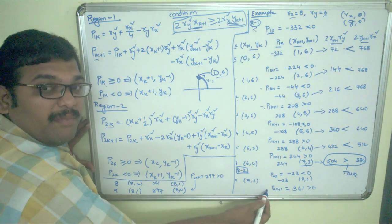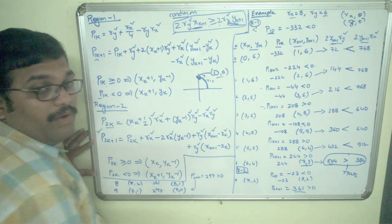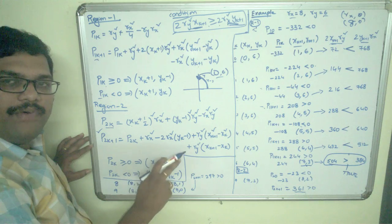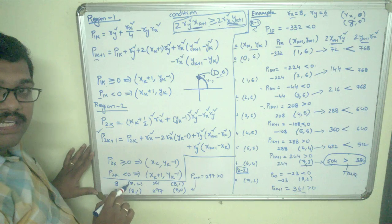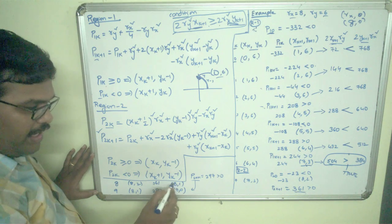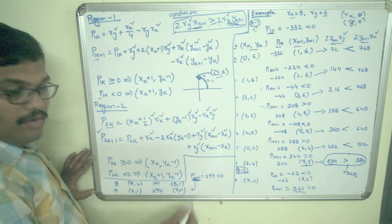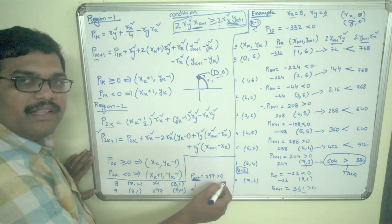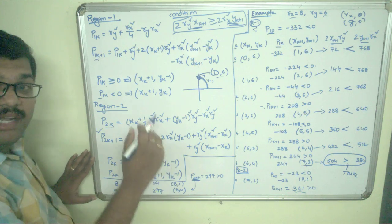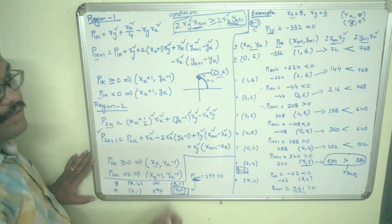Calculate p2k+1 using the region 2 formula, getting 361 > 0. If p2k > 0, x does not change and y decrements. So (8, 2) becomes (8, 1). Calculate the next decision parameter: 297 > 0. Again x stays at 8 and y decrements to 0, giving (8, 0) — our final coordinate. We stop the calculations here.